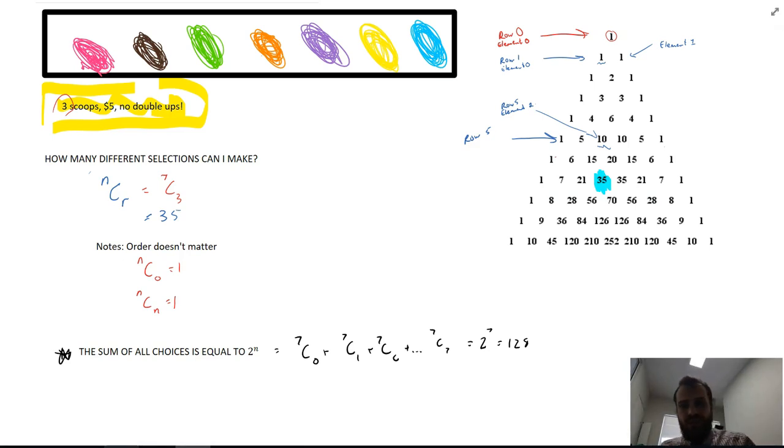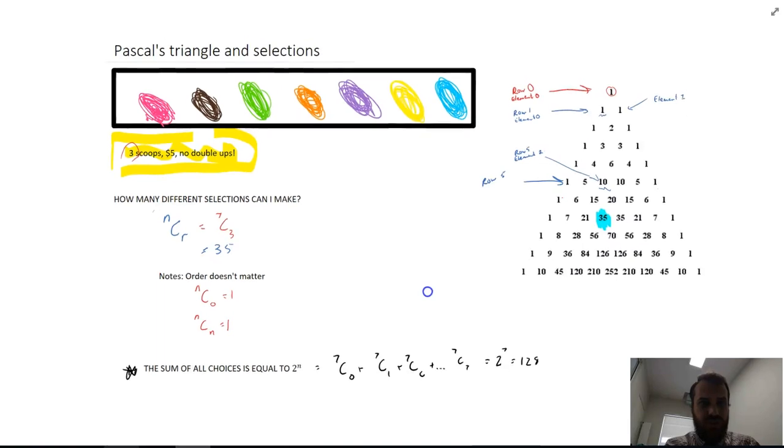You could choose no ice cream flavors. You could choose all ice cream flavors. You could choose two different flavors. Sorry, you could choose one flavor. You could choose two different flavors, three, and there's a whole bunch, there's 128 different combinations that you could choose there.